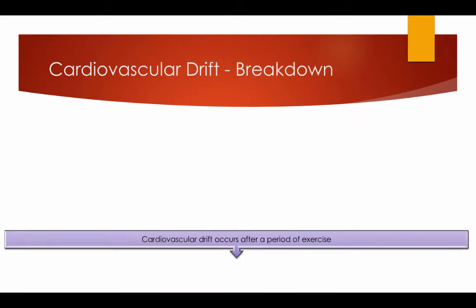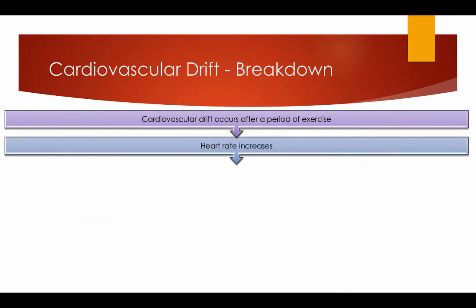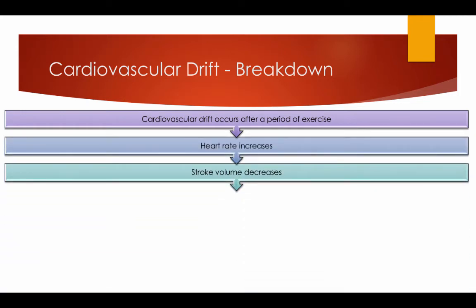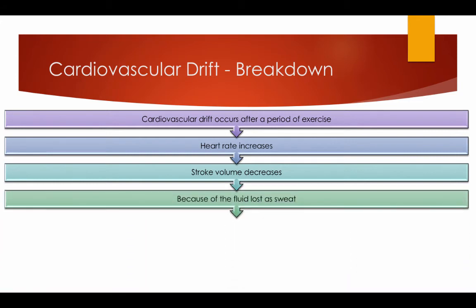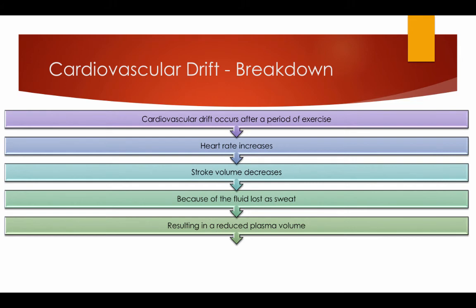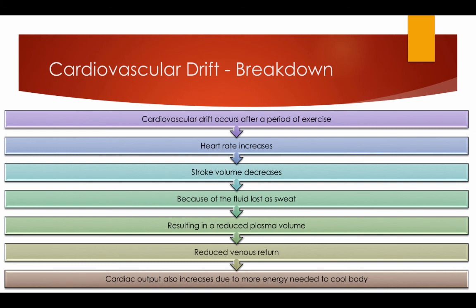Cardiovascular drift breakdown: cardiovascular drift occurs after a period of exercise. Heart rate increases and stroke volume decreases because of fluid lost as sweat, resulting in a reduced plasma volume, reducing the venous return. Cardiac output is also increased due to the more energy needed to cool the body.